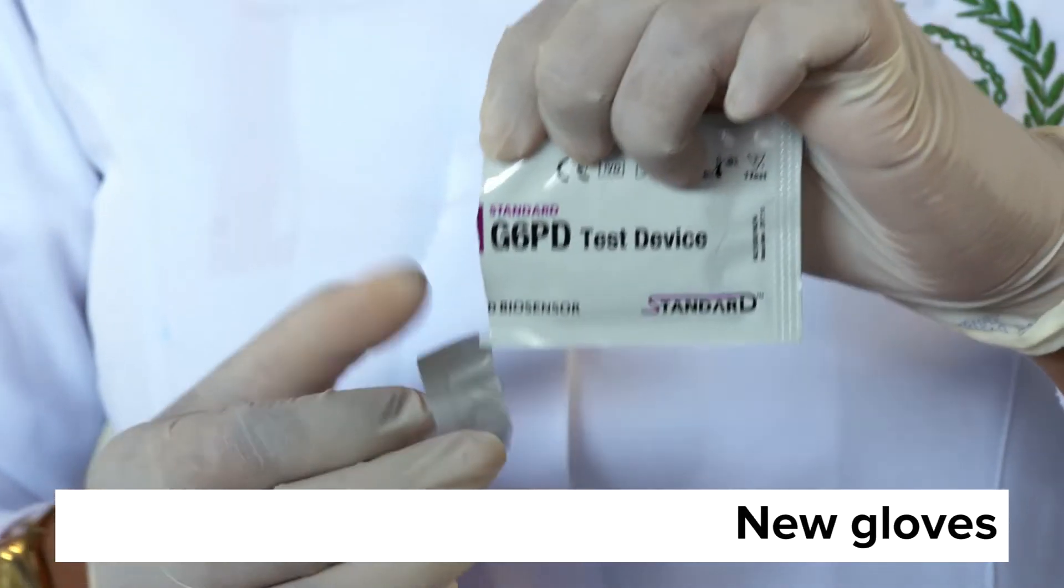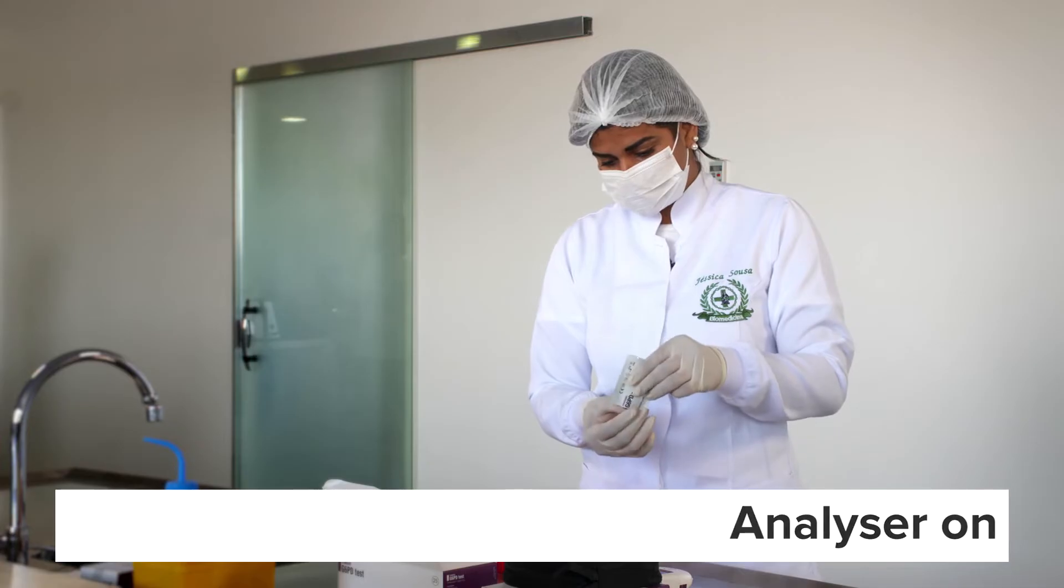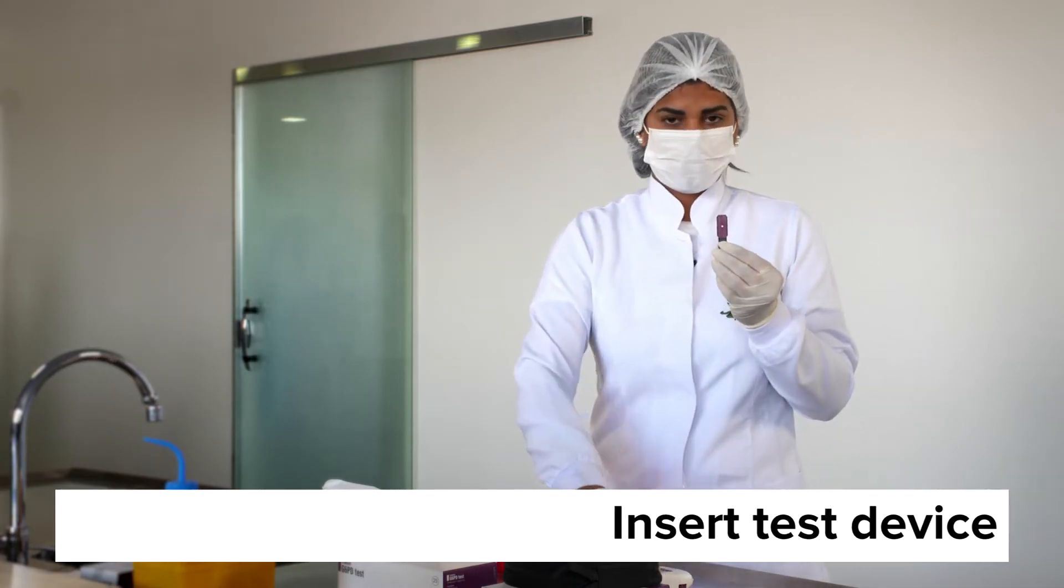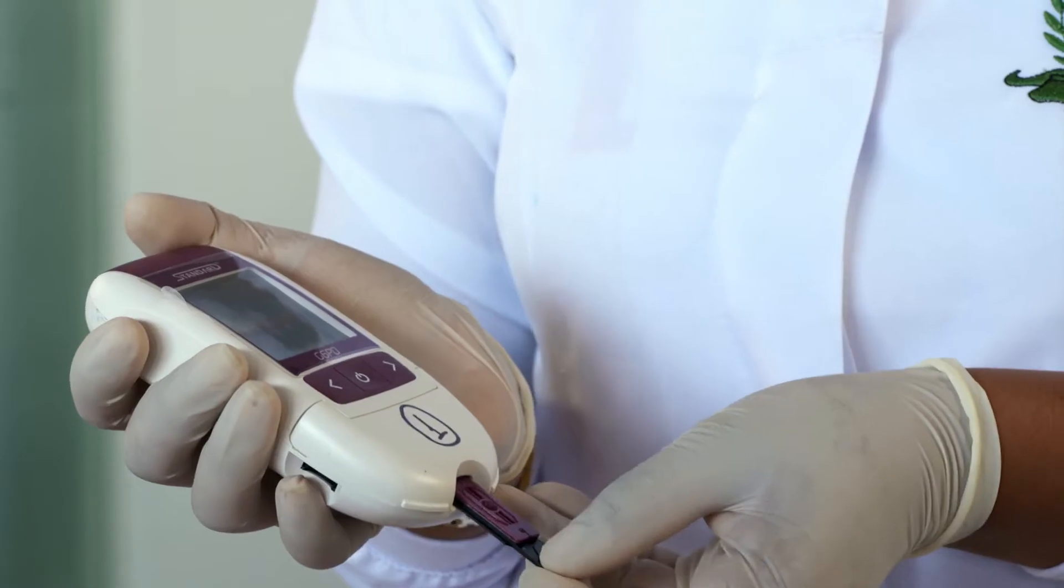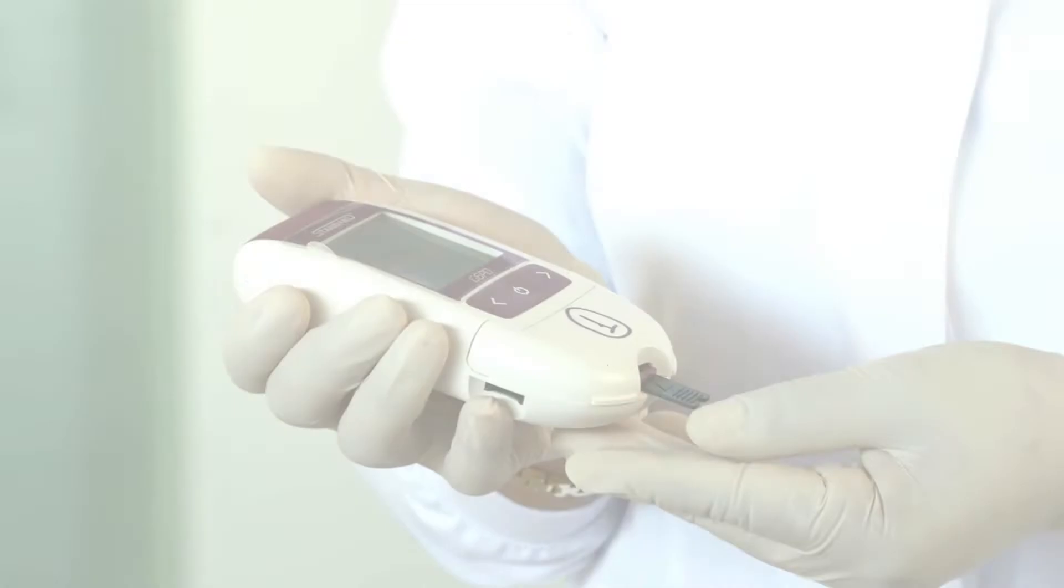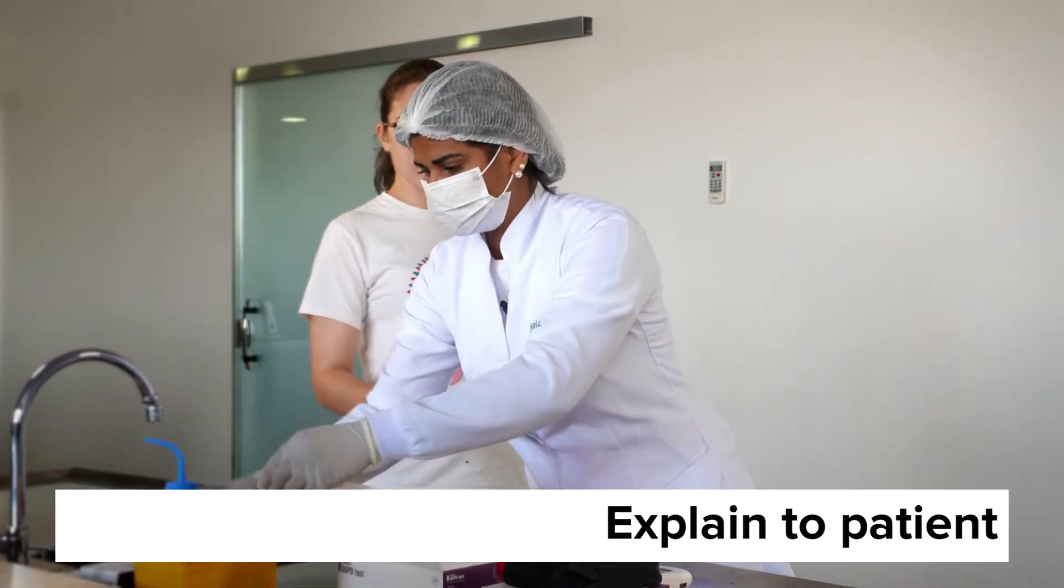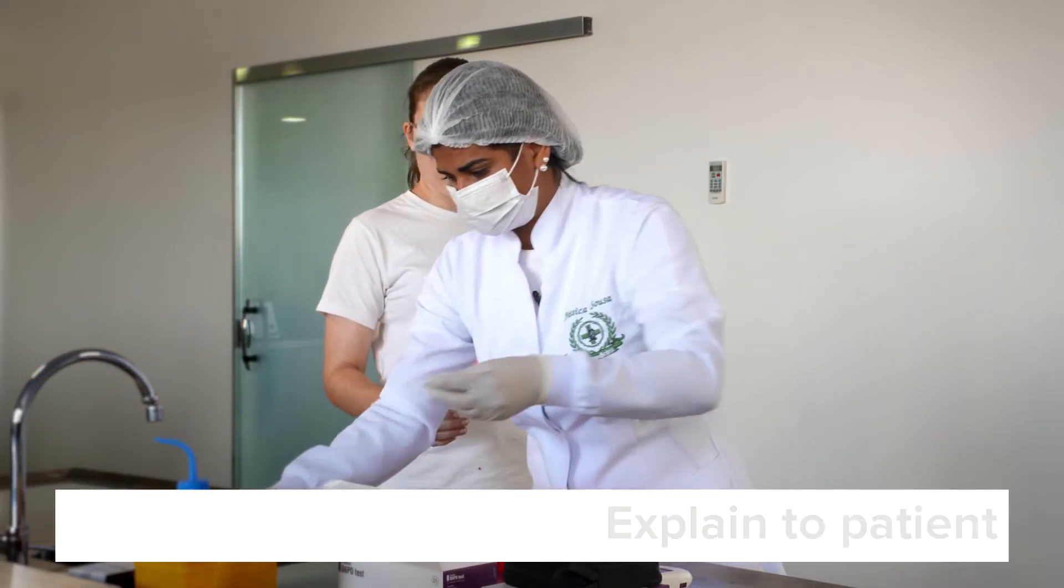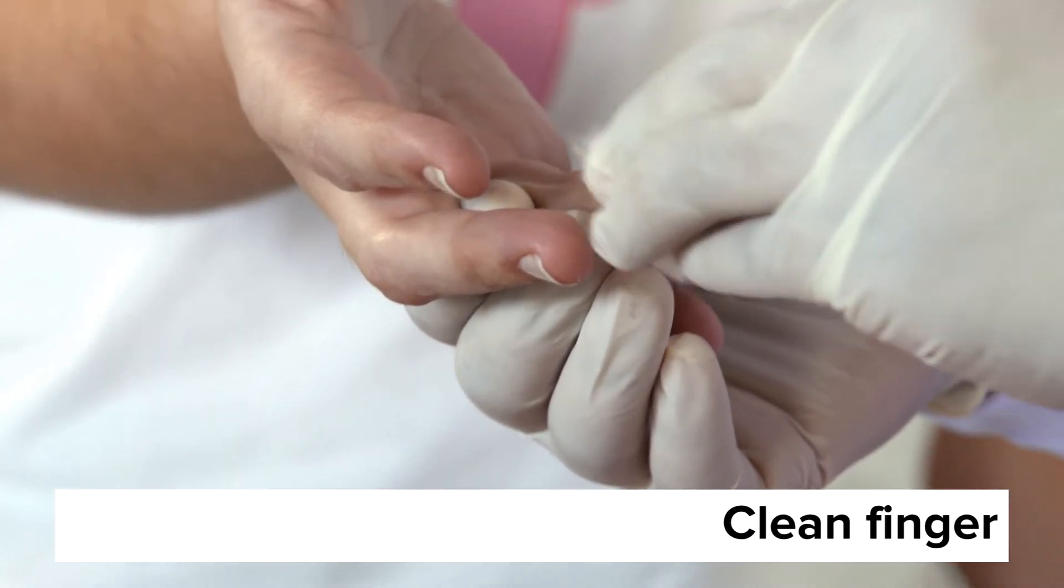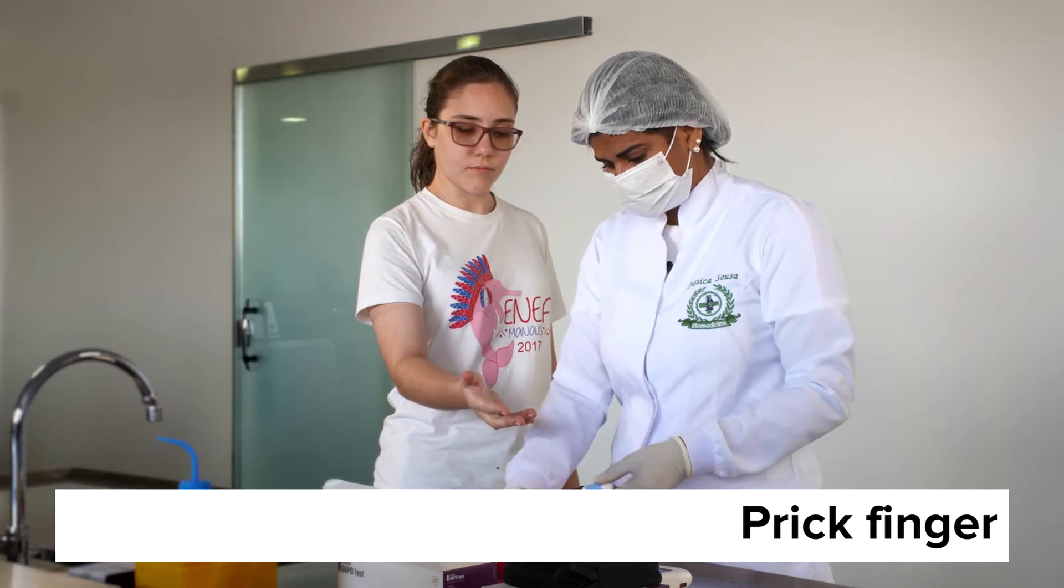Using new gloves for each patient, turn the analyzer on and insert the bigger part of the test device into the analyzer. Explain to your patient why and how you are doing the test and clean a finger of their non-dominant hand with an alcohol swab and allow to dry. Then prick the patient's finger.